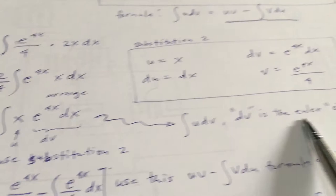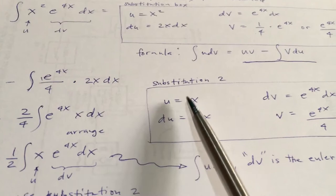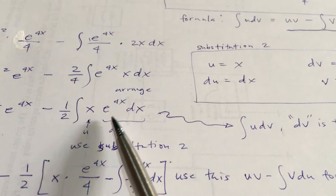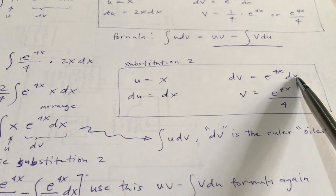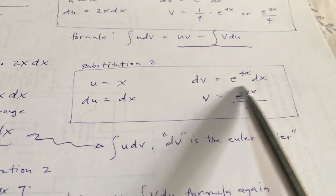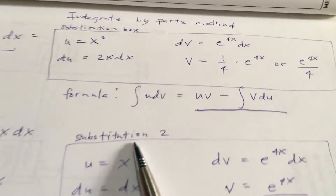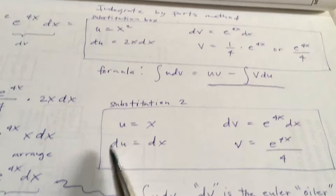Use the formula again, because we are going to integrate this a second time — this is the first time, and this is the second time. We are going to make another substitution box, number 2. What is your u? Your u is x. What is your dv? Your dv is e raised to the 4x dx. The differentiation of x will be dx. The integration of e raised to the 4x dx is e raised to the 4x over 4. This is the same as the first substitution box, except for the differentiation.